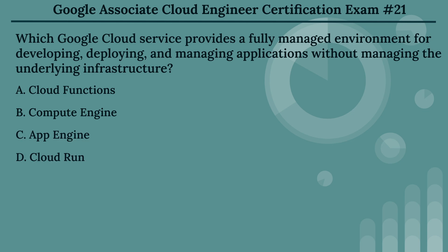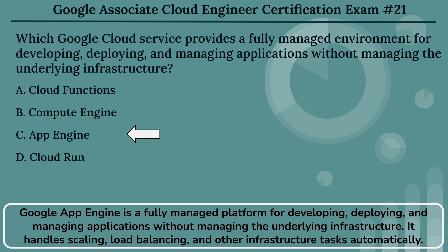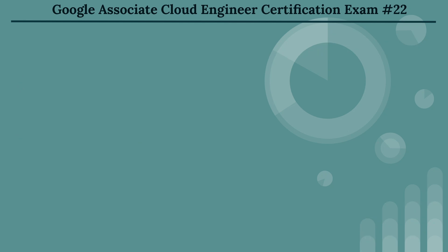The right answer is Option C: App Engine. Google App Engine is a fully managed platform for developing, deploying, and managing applications without managing the underlying infrastructure. It handles scaling, load balancing, and other infrastructure tasks automatically.